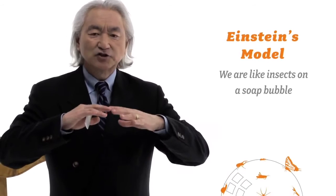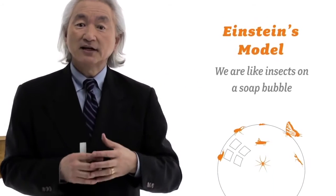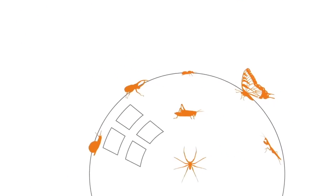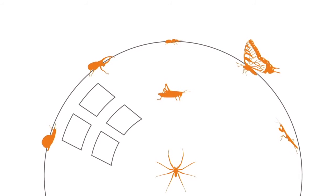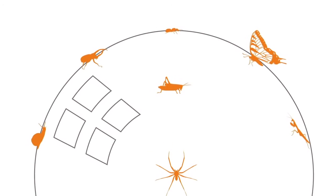that there is a multiverse of universes. Where did the Big Bang come from? Well, Einstein's equations give us this compelling picture. That we are like insects on a soap bubble. A gigantic soap bubble which is expanding. And we are trapped like flies on flypaper. We can't escape the soap bubble. And that's called the Big Bang theory.